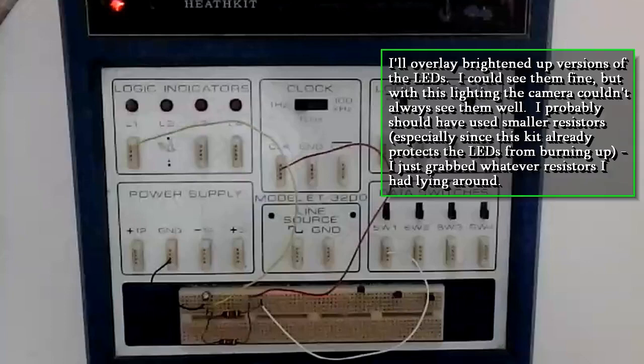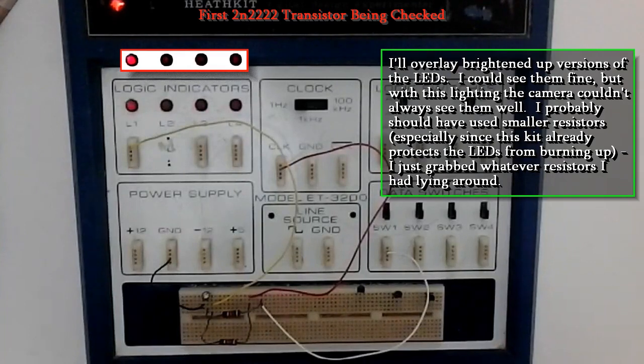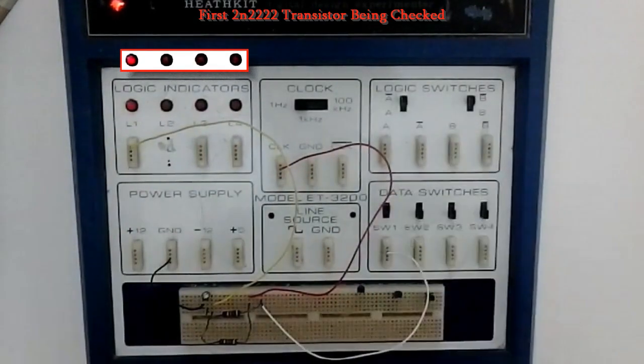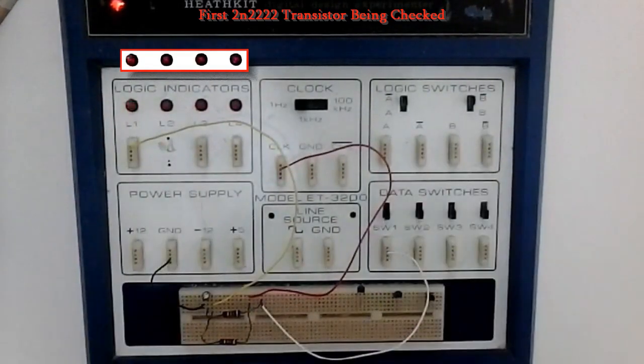Here's the circuit built on this old Heathkit electronics trainer. The clock set to 1 Hz supplies the power to the LED, and the switch turns on and off the control voltage to the base of the transistor. The LED should blink when the switch is off and not be lit at all when the switch is on.